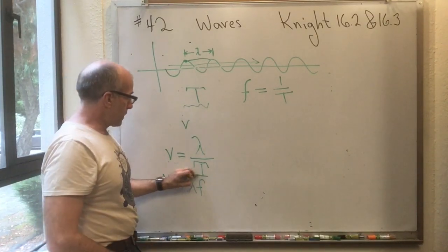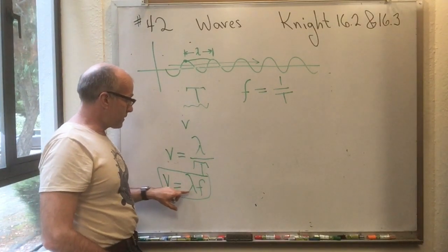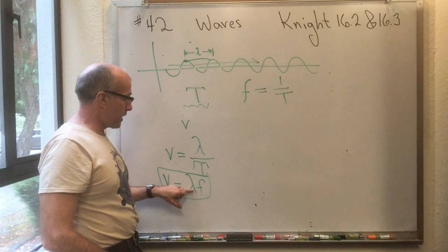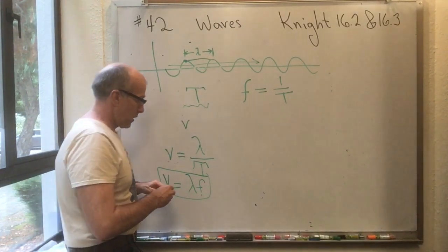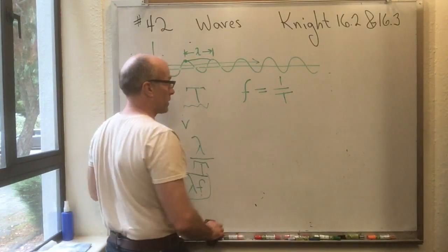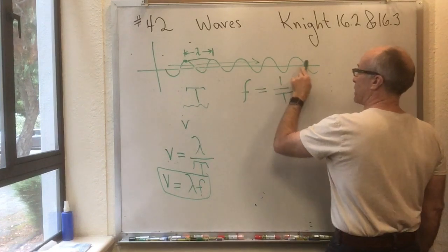So there's a nice relationship for waves. The speed of the wave is the frequency of the wave times the wavelength of the wave. Okay, that's kind of a nice little result. And then this sinusoidal business.